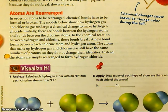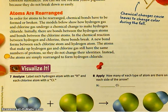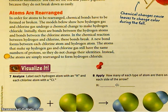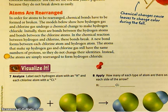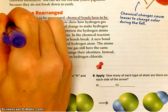Atoms are rearranged. In order for atoms to be rearranged, chemical bonds have to be formed or broken. The models show how hydrogen gas and chlorine gas undergo a chemical change to make hydrogen chloride. Initially, there are bonds between the hydrogen atoms and bonds between the chlorine atoms. In the chemical reaction between hydrogen and chlorine, these bonds break. A new bond forms between each chlorine atom and hydrogen atom. The atoms still have the same number of protons, so they do not change their identities — the atoms are simply rearranged to form hydrogen chloride.